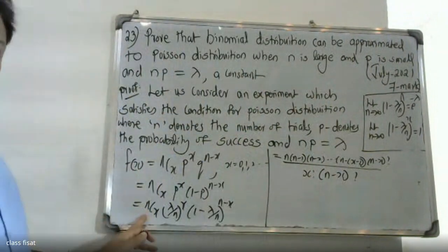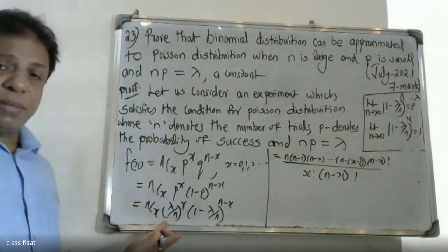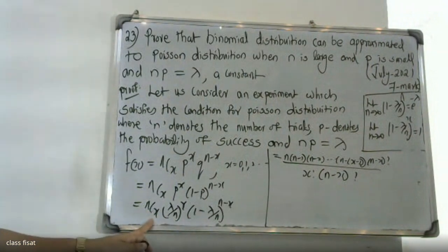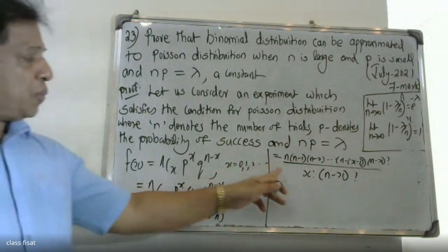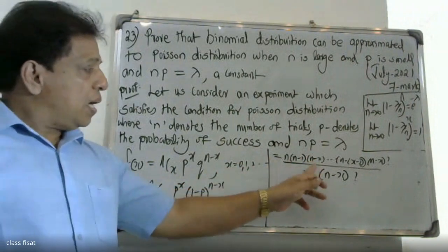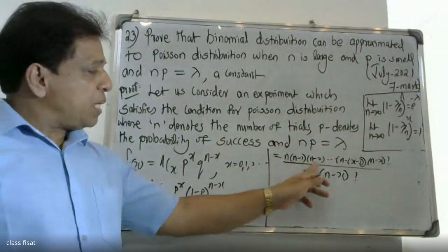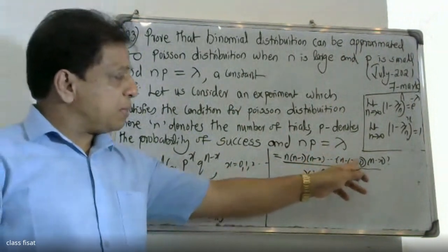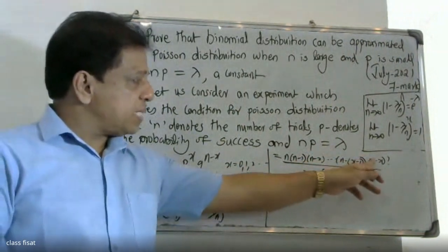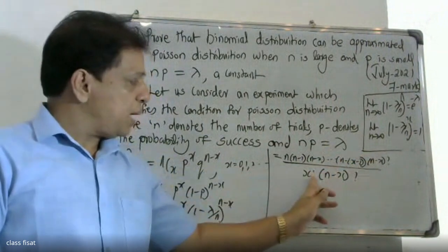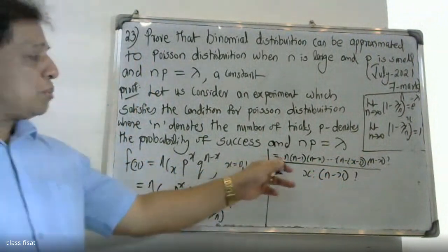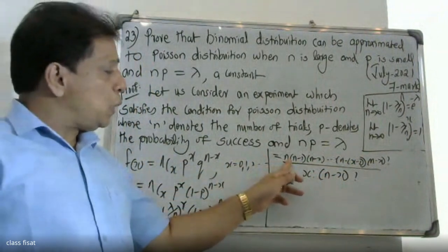So nCx can be written as n factorial, which equals n into n minus 1, n minus 2, etcetera, n minus x minus 1, n minus x factorial, divided by x factorial into n minus x factorial. The n minus x factorial in the numerator cancels out.